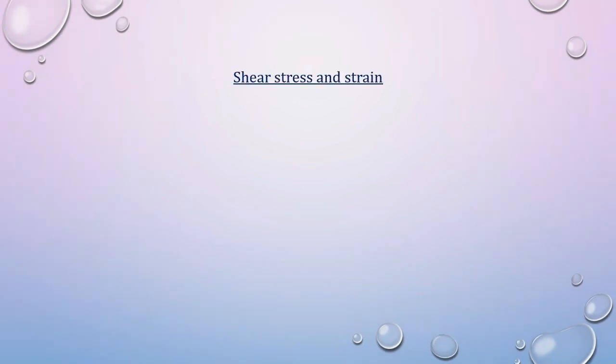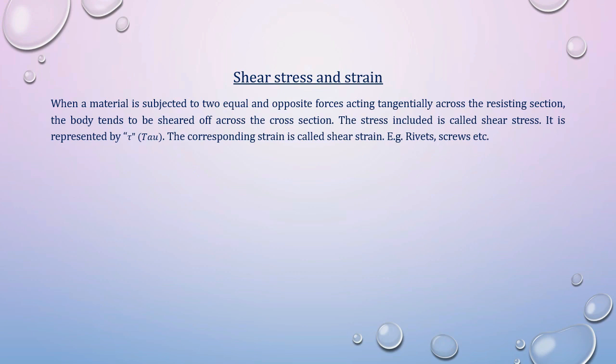Shear stress and strain: when a material is subjected to two equal and opposite forces acting tangentially across the resisting section, the body tends to be sheared off across the cross-section. The stress induced is called shear stress, represented by tau. The corresponding strain is called shear strain. Examples include rivets, screws, etc.